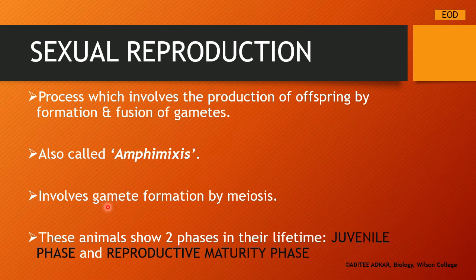As there is gamete formation in sexual reproduction, the process of meiosis is going to take place here — this is a key difference between asexual and sexual reproduction. Animals which show sexual reproduction also show two phases in their lifetime: one is the juvenile phase, when the animal is young and not yet capable of reproduction, and the next is the reproductive maturity phase, when the animal can reproduce.